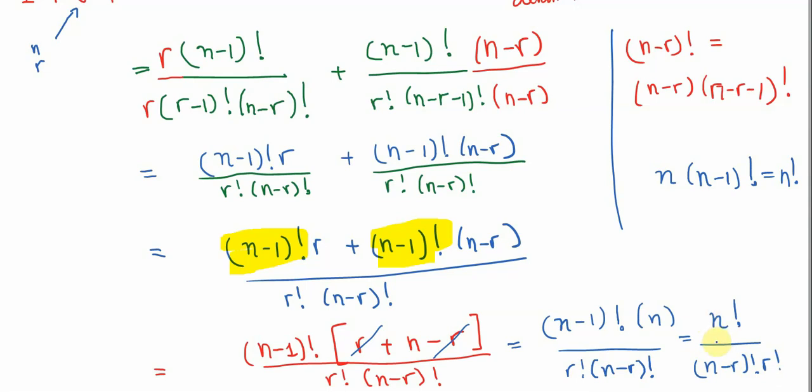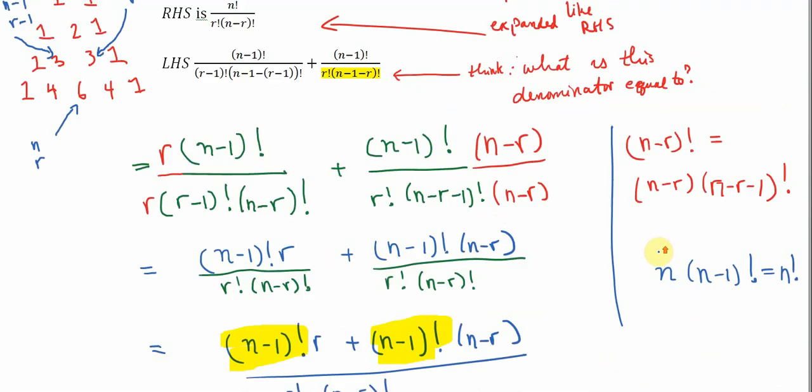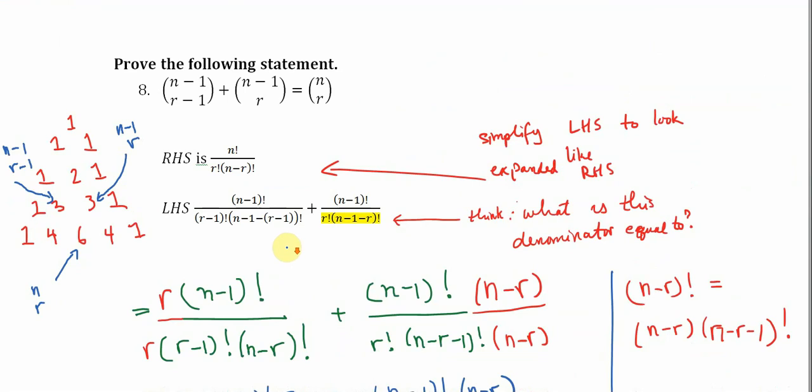So there we have it, we're done. If we start with the left hand side, apply all the steps, work out everything correctly, and slowly, we end up with this result right here, which again, the significance of this is that it proves the correctness of Pascal's triangle.